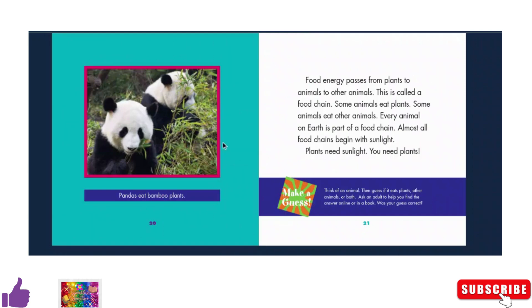Pandas eat bamboo plants. Food energy passes from plants to animals to other animals. This is called a food chain. Some animals eat plants. Some animals eat other animals. Every animal on Earth is part of a food chain. Almost all food chains begin with sunlight. Plants need sunlight. You need plants.